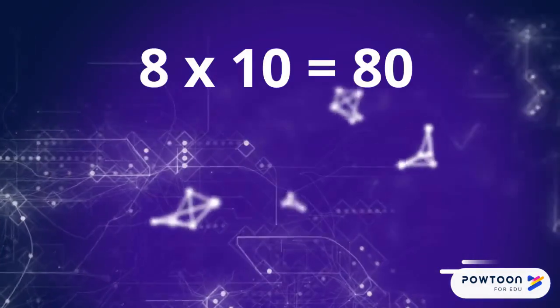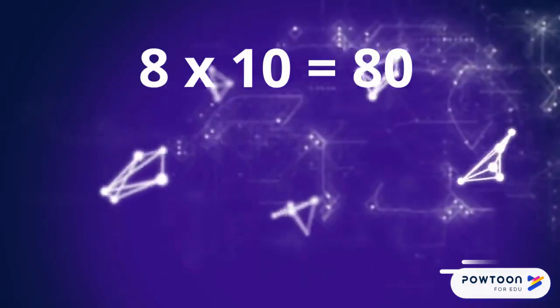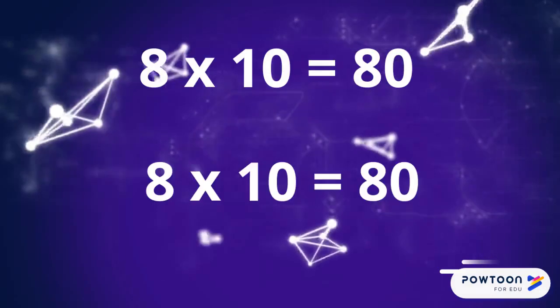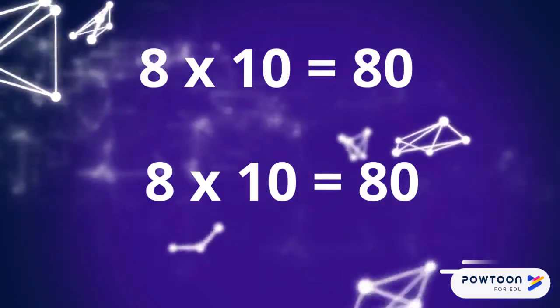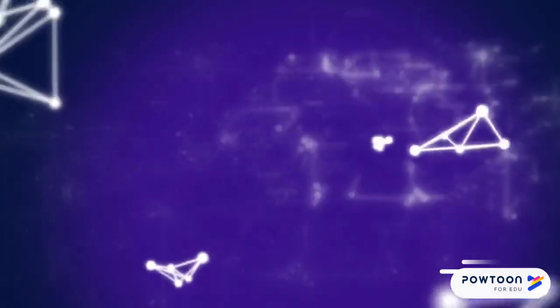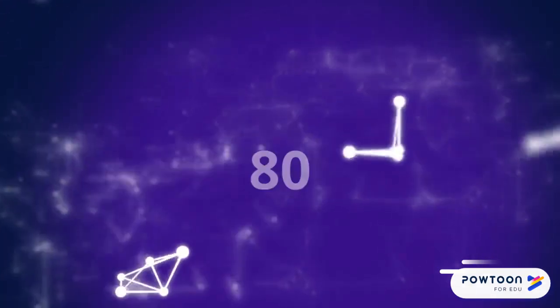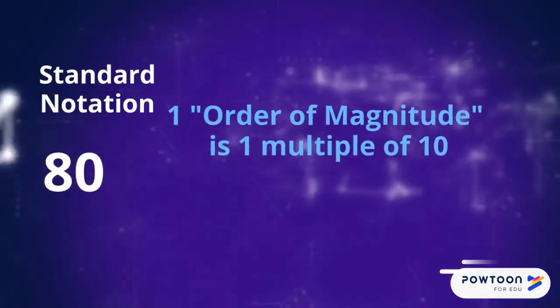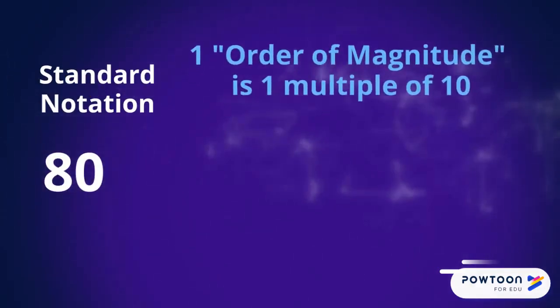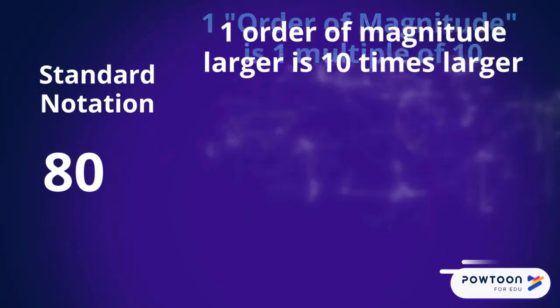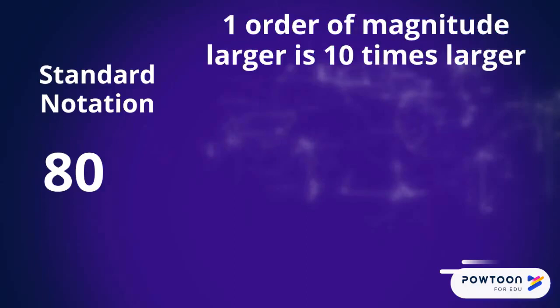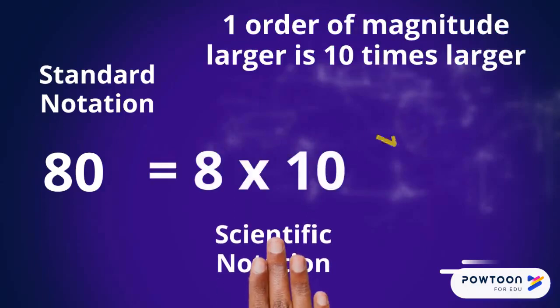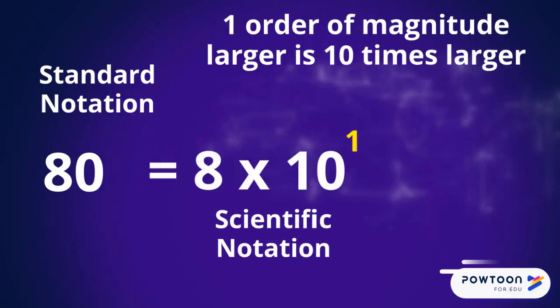8 times 10 is 80. We can replace the 10 with 10 to the 1. So the number 80 is 1 order of magnitude larger than 8. One order of magnitude larger is 10 times larger. So the number 80 in scientific notation is 8 times 10 to the 1.